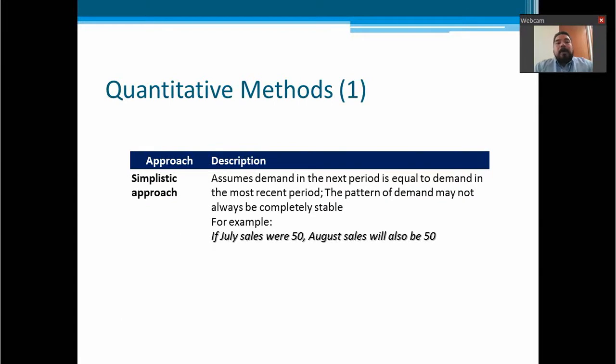When we talk about quantitative methods, the first of them will be the simplistic approach. It assumes that the demand in the next period is equal to the demand in the most recent period. The pattern of the demand may not always be completely stable. For example, if July sales were 50, then August sales will also be 50. This is a very simplistic approach, but you would be very surprised how many companies use this kind of approach.